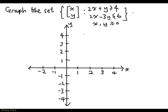So let's try to graph the set of pairs (x, y) satisfying 2x plus y greater than or equal to 4, 2x minus 3y less than or equal to 6, and x and y are both non-negative. How do you handle this?